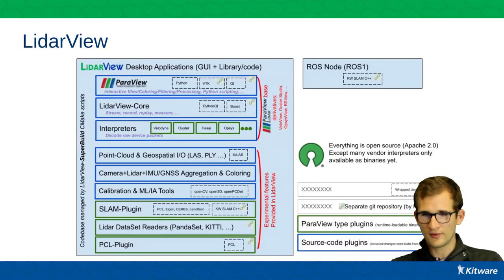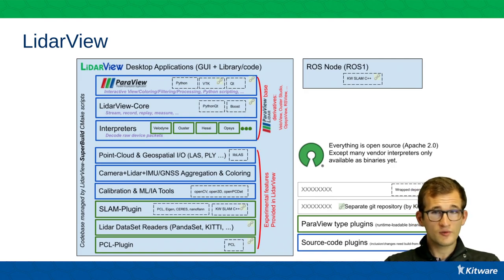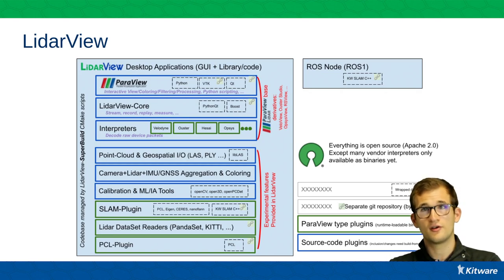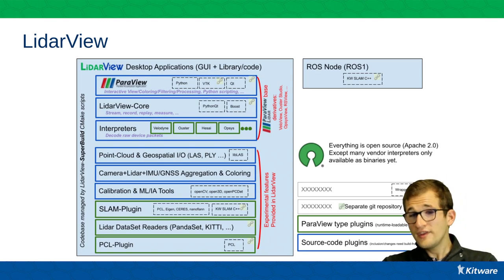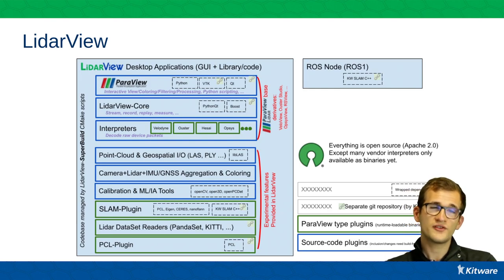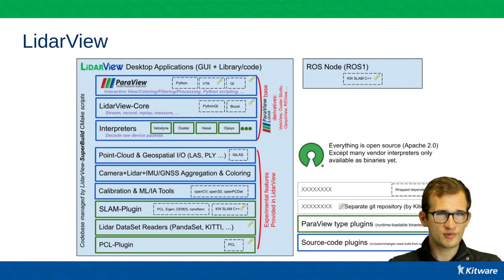LidarView is a ParaView-based application. It was initially designed by Kitware in 2013, released as VeloView, and designed for easily recording, replaying, and processing LiDAR data. This common codebase quickly became a standard in the world of LiDAR viewers and is now used by many different vendors, such as Velodyne, Ouster, Opsys, HesaiEye, and many others. Kitware created LidarView two years ago to unify this common codebase and incorporated experimental features to make LidarView a rapid prototyping tool.